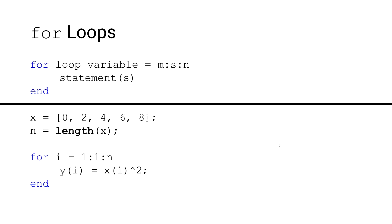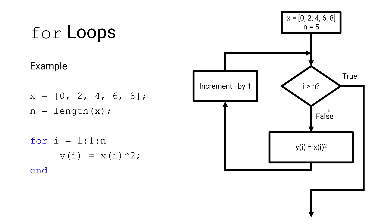The final value is n, where n is determined using the length function. The length function returns the number of elements in the row array x — in this case x has 5 elements: 0, 2, 4, 6, and 8. For each pass of our loop we'll evaluate the statement y equals x squared. Looking at the code can be a bit confusing, so let's take a look at this flowchart which can help us visualize each loop pass.